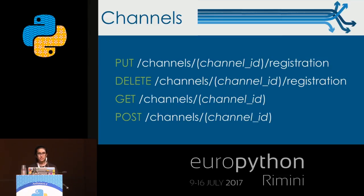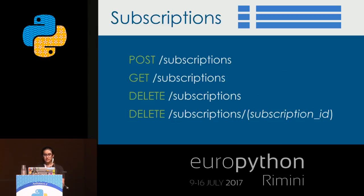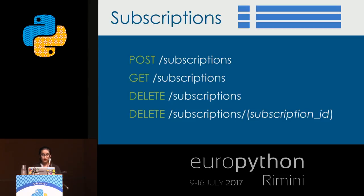To post information to a particular channel, use POST /channel/{channel_id}. For the subscriptions endpoint, where we maintain information about encryption keys and endpoint URLs for a particular user: POST /subscriptions lets you post subscription information to the API. GET /subscriptions fetches subscription information for a particular user. DELETE removes all subscriptions, and DELETE /subscriptions/{subscription_id} deletes a particular subscription.